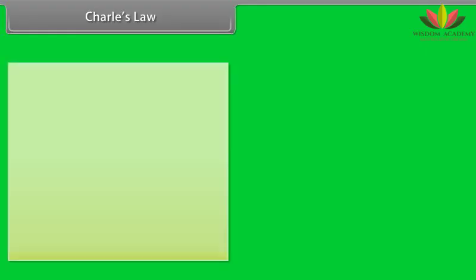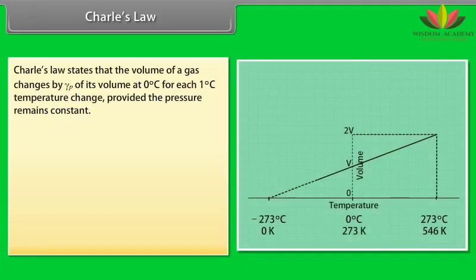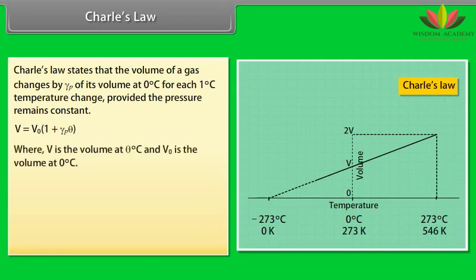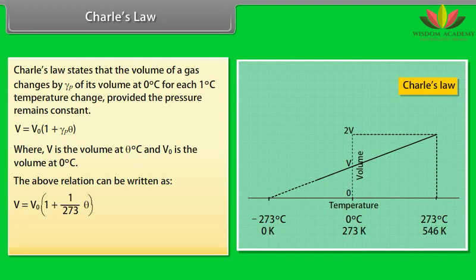Charles law. Charles law states that the volume of a gas changes by gamma P of its volume at 0 degree centigrade for each 1 degree centigrade temperature change provided the pressure remains constant. V is equal to V not multiply by 1 plus gamma P theta, where V is the volume at theta degree Celsius and V not is the volume at 0 degree centigrade. The above relation can be written as V is equal to V not multiply by 1 plus theta upon 273.